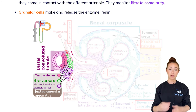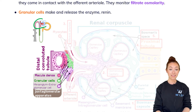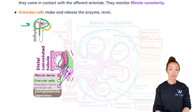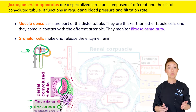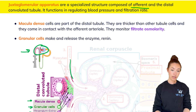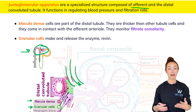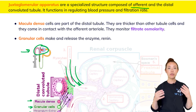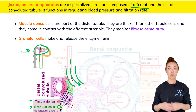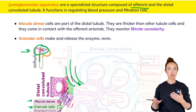The distal convoluted tubule actually loops around, and part of it contacts the glomerulus — you can see that in this image. The special cells in that region are called macula densa cells, and together with other cell types they form the juxtaglomerular apparatus. The JG apparatus is in contact with the afferent arteriole, and it functions to help regulate blood pressure and filtration rate by controlling how constricted the afferent arteriole is, thereby controlling the amount of blood reaching the glomerulus.